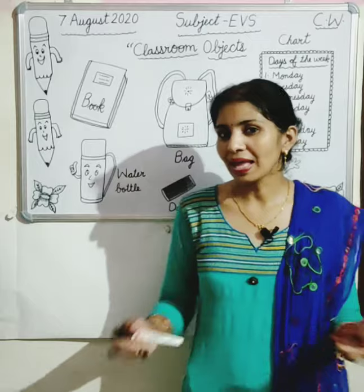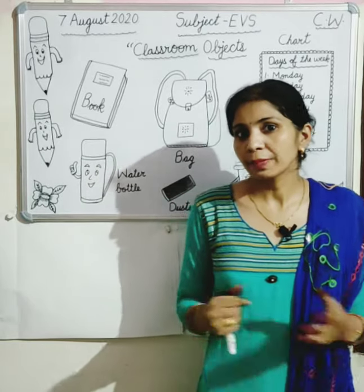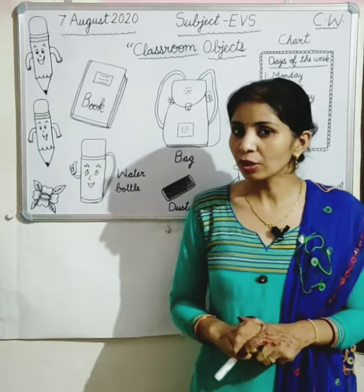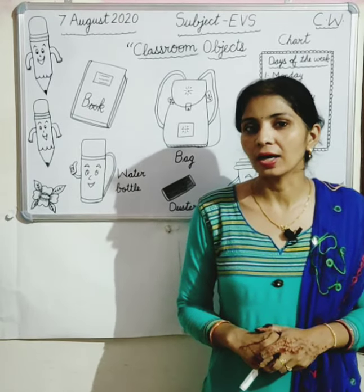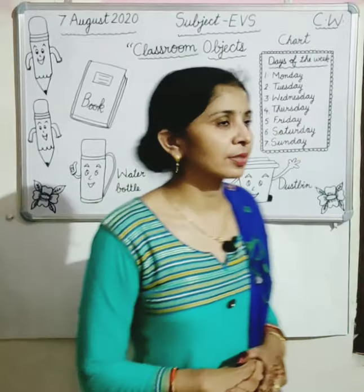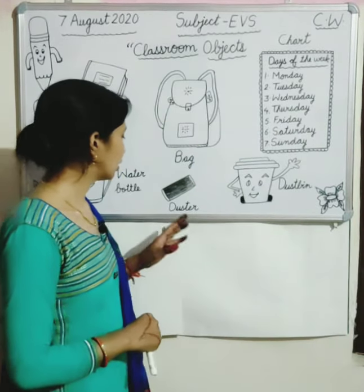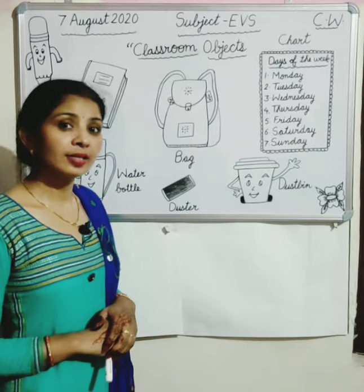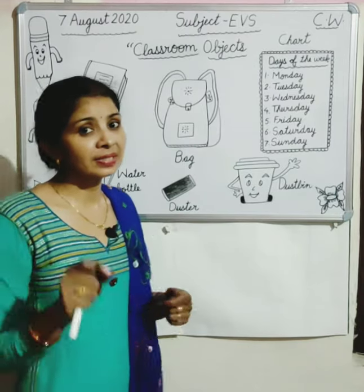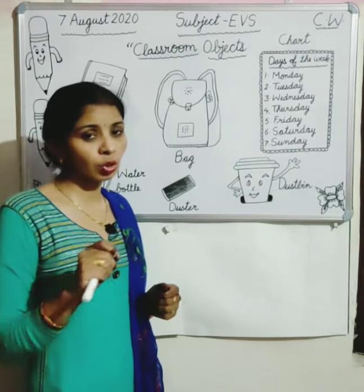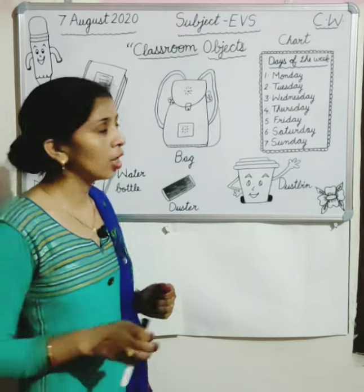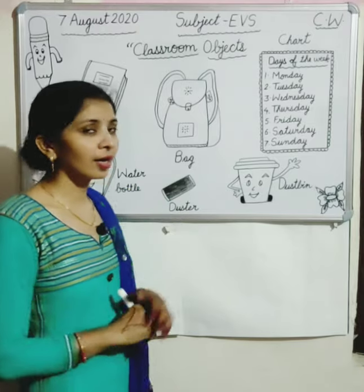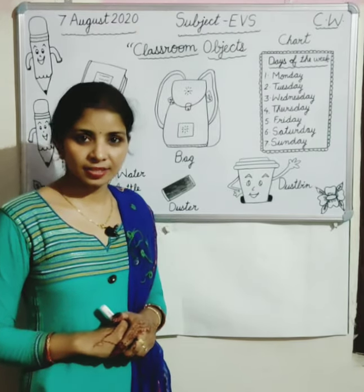And these are pencils. Pencils ke bina hum kuch bhi nahi likh sakti hain na? Toh aapke bag mein pencil bhi hoti hai na? Eraser bhi hoti hai na? Geometry box hoti hai na aapke paas. Look here. What is this? This is a duster. Jaise aap pencil se likhi ho, rough karne ke liye eraser use karte ho na? Toh main marker se likhti hoon board par, toh kya use karti hoon? Duster. This is a duster.